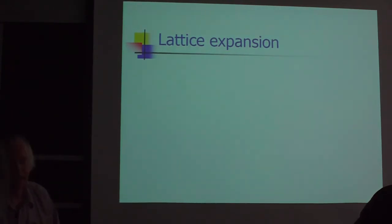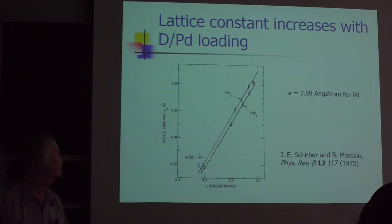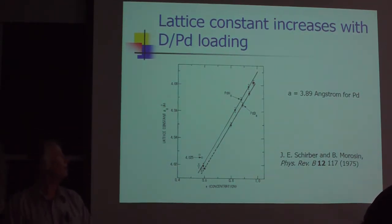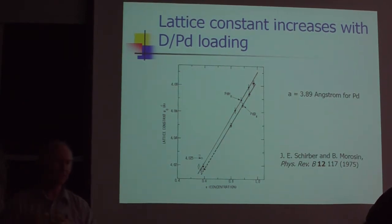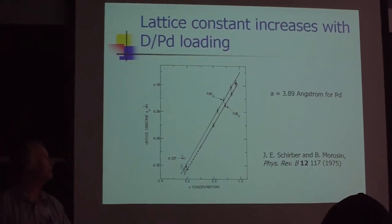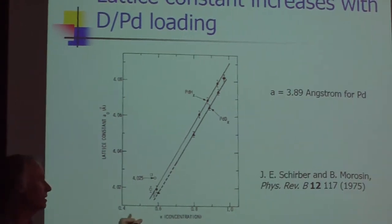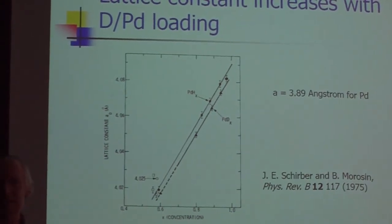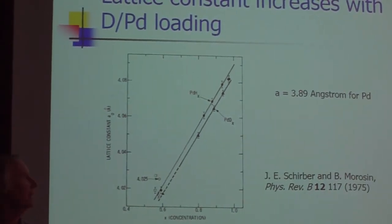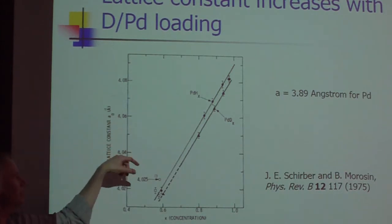And the place I'm going to start is the lattice expansion. The basic issue has to do with the following. When you put hydrogen or deuterium into palladium, it stretches out. It goes into the interstices and stretches out. So on this axis here is the concentration, which is the number of hydrogen and deuterium per palladium. And here's the lattice constant.